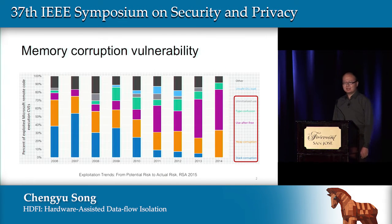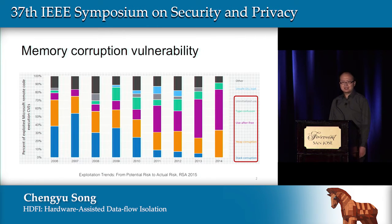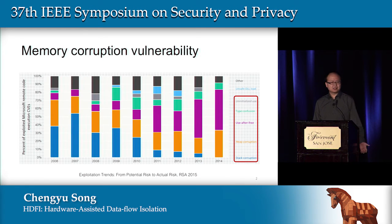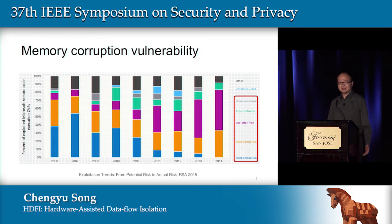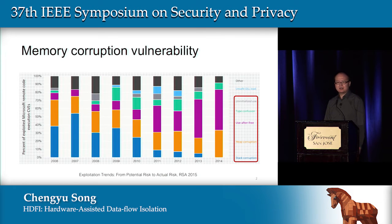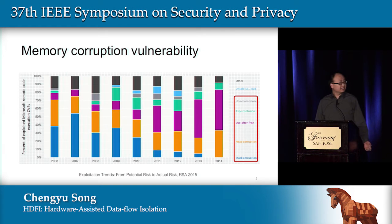In this work, our focus is memory corruption vulnerabilities. Due to the popularity of C and C++ programs, especially in daily-use large programs like kernels or browsers, memory corruption vulnerabilities are very common. At the same time, memory corruption vulnerabilities are highly exploitable and can usually lead to arbitrary code execution. For this reason, they are one of the most widely exploited vulnerability types. According to statistics from Microsoft, memory corruption vulnerability is the dominant root cause for remote code execution on Windows.